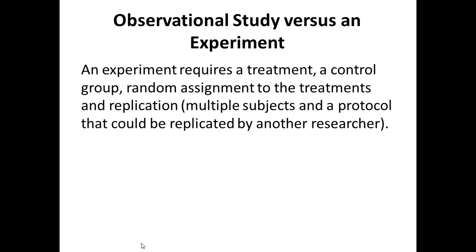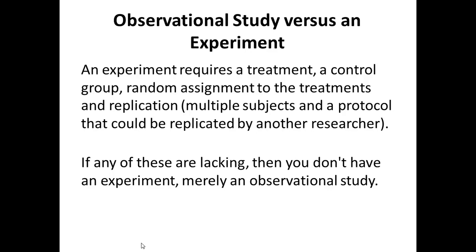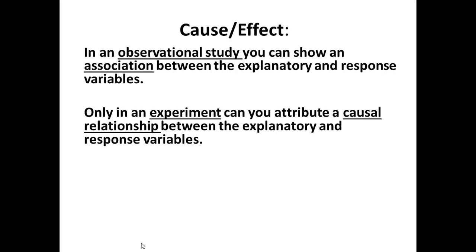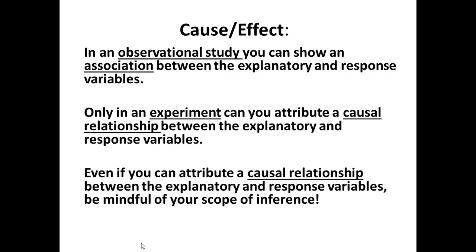An experiment requires a treatment, a control group, random assignment to the treatments, and replication — multiple subjects and a protocol that could be replicated by another researcher. If any of these are lacking, then you don't have an experiment, merely an observational study. In an experiment, researchers manipulate something and measure the effect on some outcome of interest. Only in an experiment can you attribute a causal relationship between the explanatory and response variables. Even if you can attribute a causal relationship, you should be mindful of your scope of inference. This ends our video on experimental design.